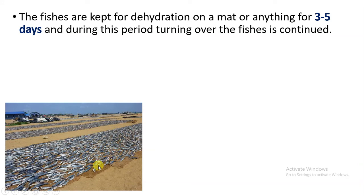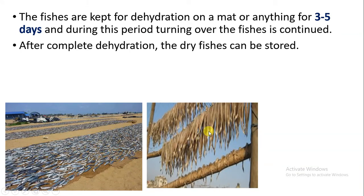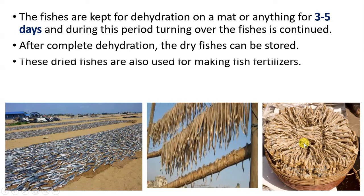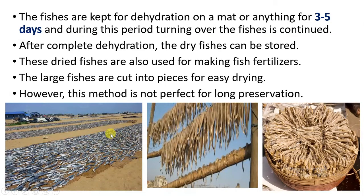During the drying process, the fish are also turned so that complete drying of both sides is achieved. Complete dehydration is observed. After drying, the fish can be stored and also used as a fertilizer, as they add nitrogen content to the soil. Large size fishes can be cut into pieces and then dried. It is the best and perfect method for long-time preservation.